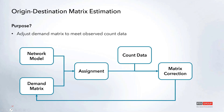What exactly is ODME used for? If you have a demand matrix that's a bit outdated and you have more recent count data — either for turning movements or on links — that data can be used to update a demand matrix to match those values. We'll take our network model and demand matrix, run that through our assignment procedure, and the assigned volumes will be compared against the count data added to the network. Based on that comparison, a matrix correction procedure will run and update the demand matrix. You can then repeat the assignment, count comparison, and matrix correction process until your assignment result aligns well with the count data.